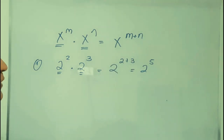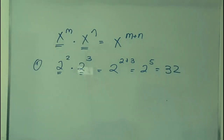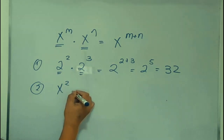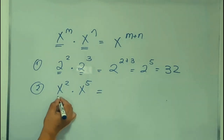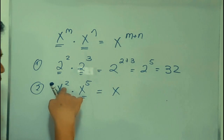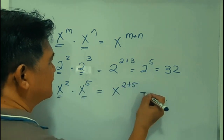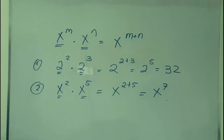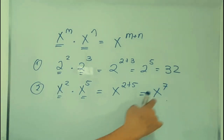So 2 raised to the fifth power is equal to 32. Example number 2: x squared times x to the fifth power. You have the common base x, so you add the exponents: 2 plus 5 equals 7. Therefore x squared multiplied by x to the fifth power is equal to x raised to the seventh power.